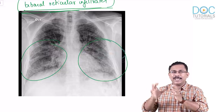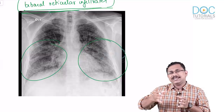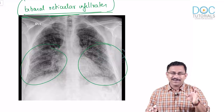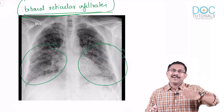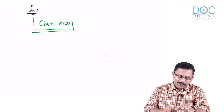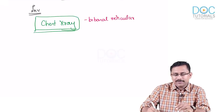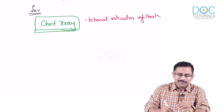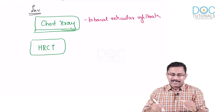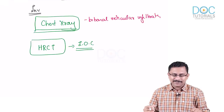The chest X-ray will show bibasal reticular infiltrates in almost all ILDs — it is only when you go for CT thorax that you can subdivide the various subtypes. Advanced disease may show infiltrates throughout the lung parenchyma. The investigation of choice for interstitial lung diseases is high-resolution CT — HRCT — because it can identify various patterns.